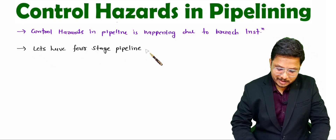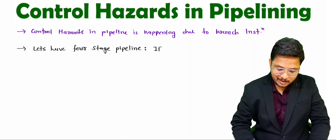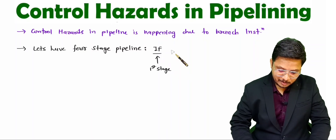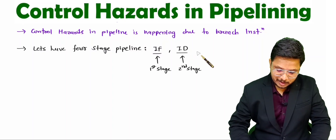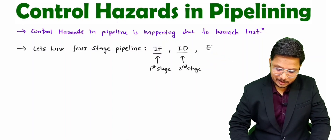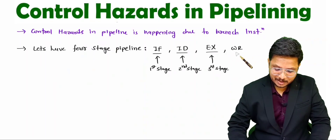The four stages are as follows: the first stage is Instruction Fetch, the second stage is Instruction Decode, the third stage is Execute Instruction, and the fourth stage is Write Back.